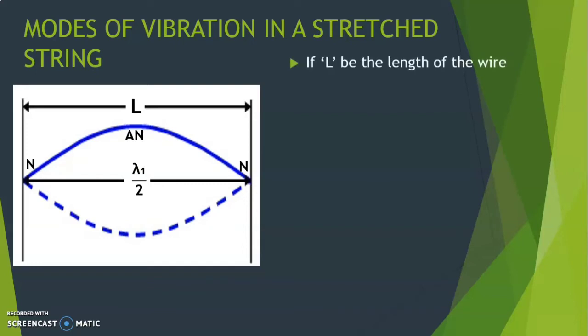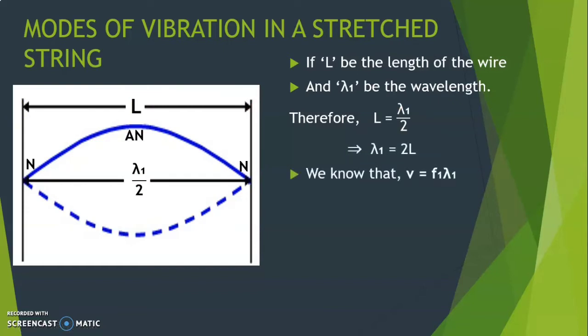If L be the length of the wire and lambda 1 be the wavelength, therefore L equals lambda 1 by 2. Since the distance between two fixed supports is equal to the length of the wire, which implies lambda 1 equals 2L. We know that wave velocity v equals f1 times lambda 1 where f1 be the frequency of vibration.